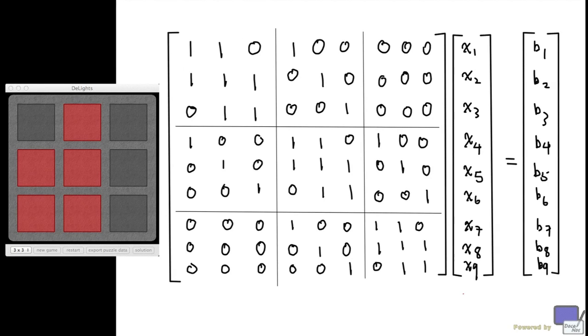In a previous video, we saw how we could set up a system of linear equations that would solve Lights Out. For the 3×3 version, the system in matrix form would look like this.